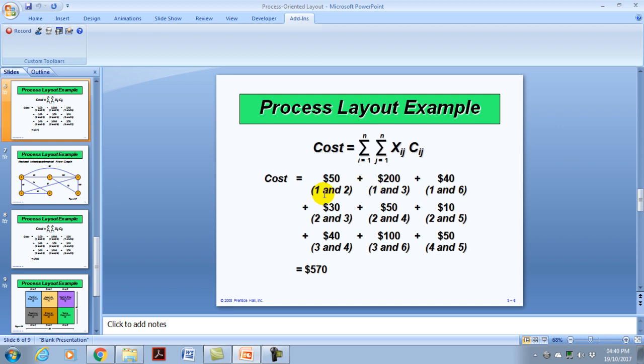So we just simply record the dollar value of the movement between or among all of the departments. And we get a, we add up the, we sum that movement, and we get a total of five hundred and seventy dollars for that particular layout in a week in terms of transportation or movement cost.